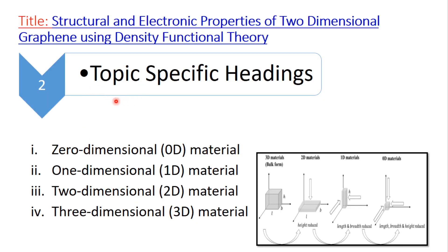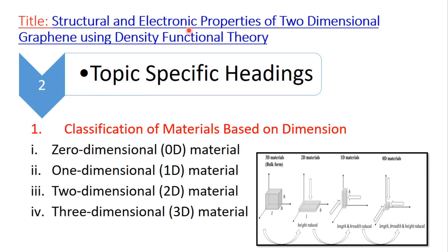There are also topic-specific headings. Since this proposal is about two-dimensional graphene, you can classify materials based on dimension — zero-dimensional, one-dimensional, two-dimensional, and three-dimensional materials. Your material, graphene, falls under two-dimensional, about which you can write in detail.